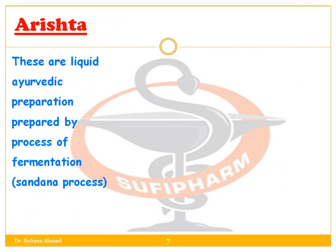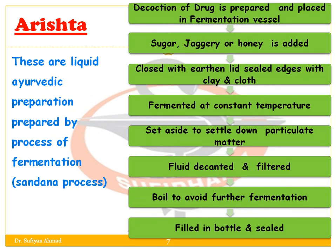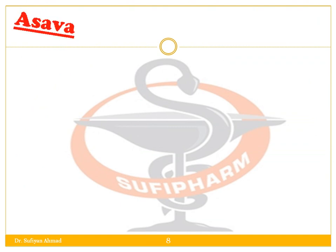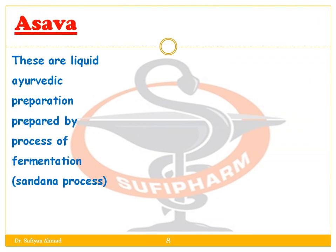The first liquid dosage form is Arista. These are liquid Ayurvedic preparations prepared by the process of fermentation. A decoction of the drug is prepared and placed in a fermentation vessel. Sugar, jaggery, and honey are added and the vessel is closed with an earthen lid, sealing the edges with clay and cloth. It is fermented at constant temperature, then set aside to allow particulate matter to settle. The fluid is then decanted, filtered, and boiled to avoid further fermentation, then filled in bottles and sealed.